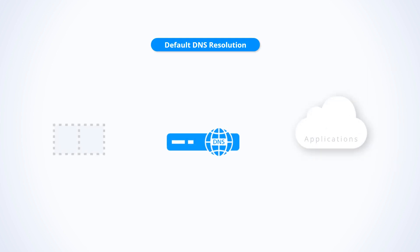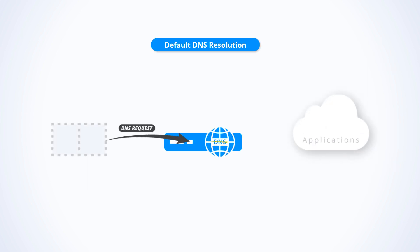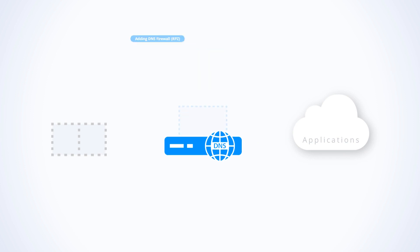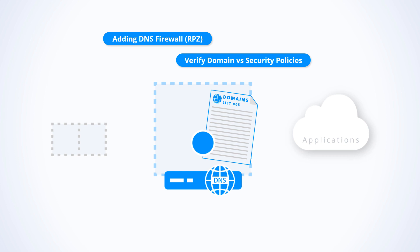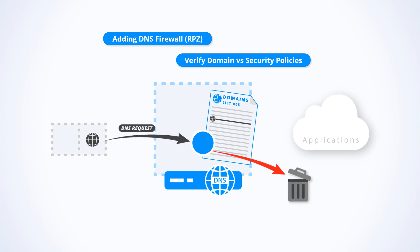Let's see how it works. A standard DNS resolver analyzes requests from any user to perform resolution. Adding DNS firewall functionality allows the filtering out of unwanted domains, so any request matching an entry in the domain list will lead to denial of resolution and therefore denial of application access.